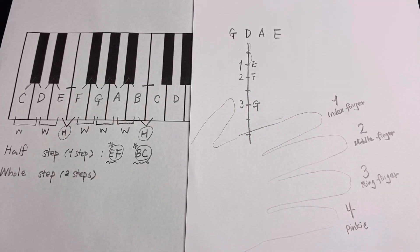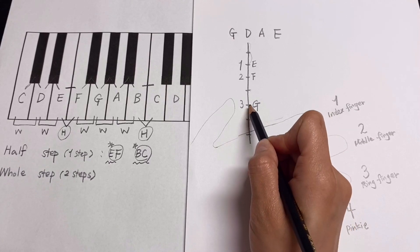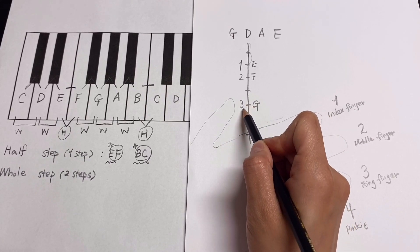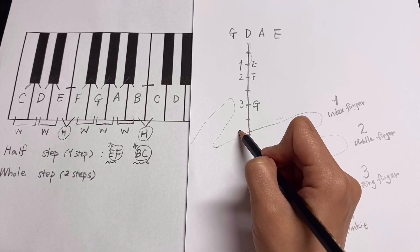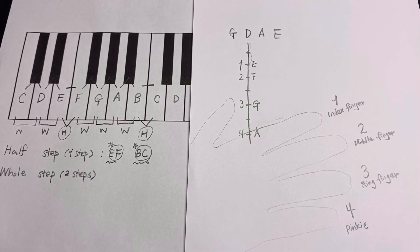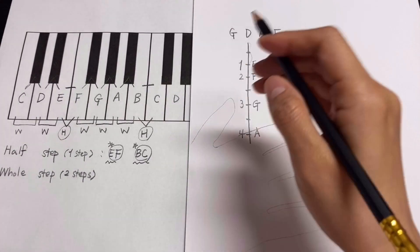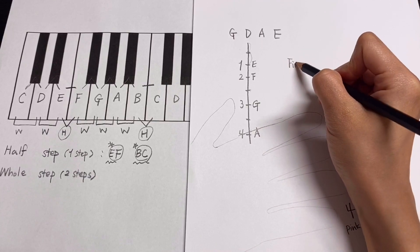Next note will be A. G and A is whole step, two steps. So you drop your pinky, your fourth finger, one, two steps farther from the third finger to play A. So this is the finger pattern on D string.